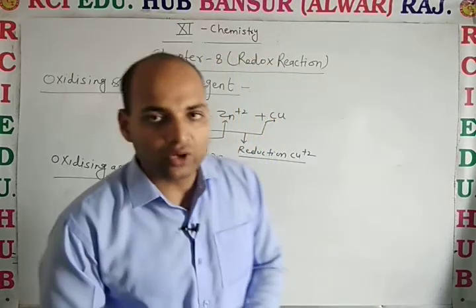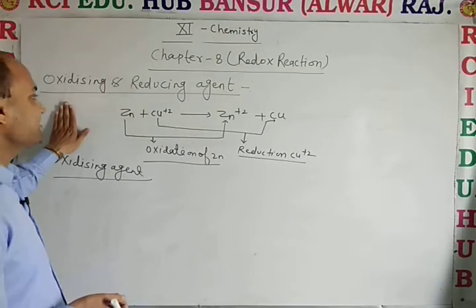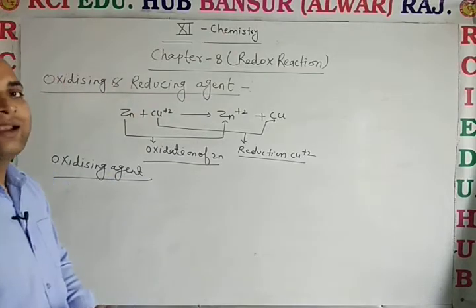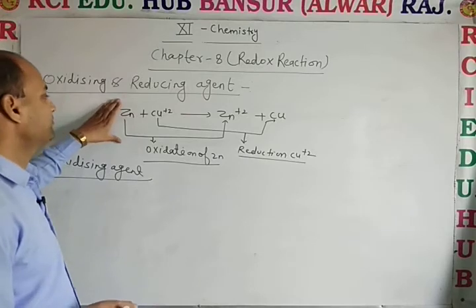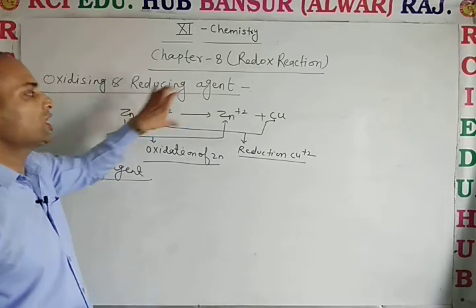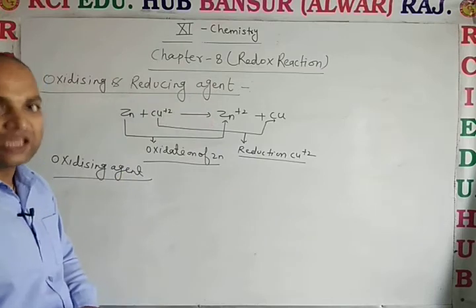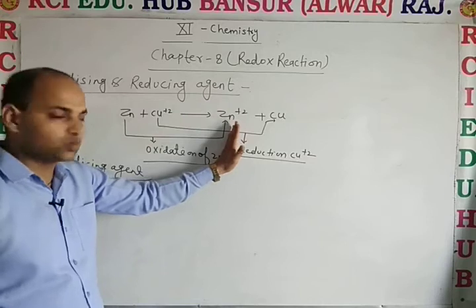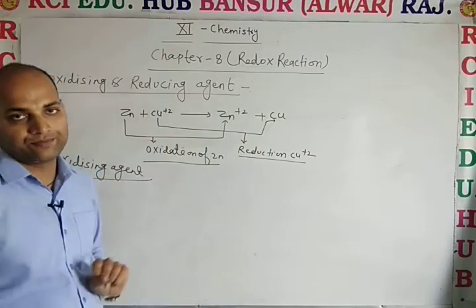Today we discuss oxidizing agent and reducing agent. Let's consider a chemical reaction: zinc plus copper²⁺ converts into zinc²⁺ and copper. In this reaction, zinc is converted into zinc²⁺, and copper²⁺ is converted into copper.